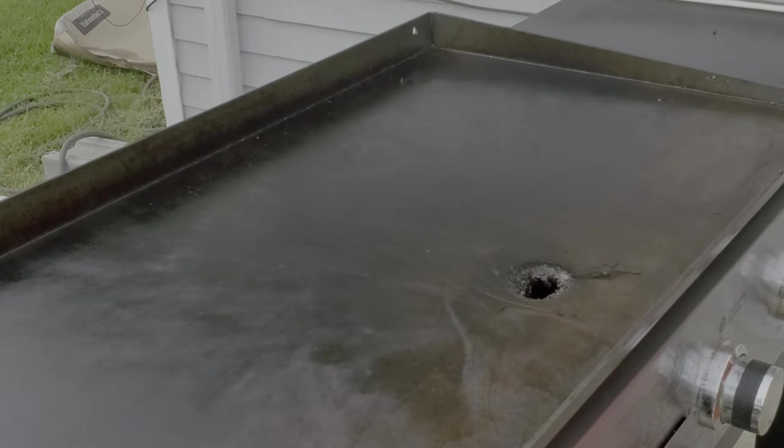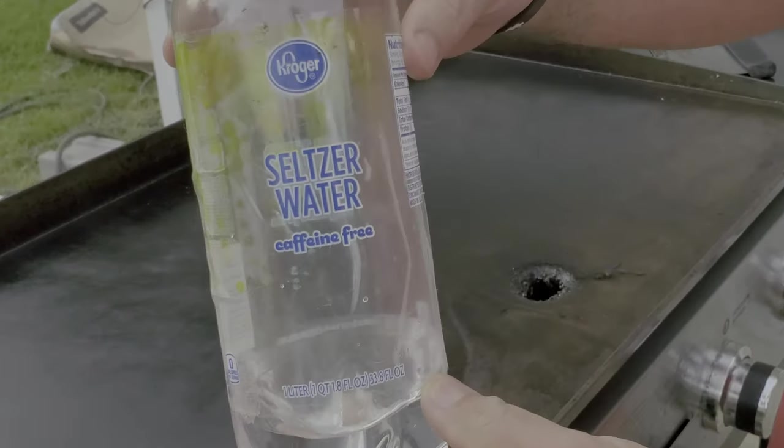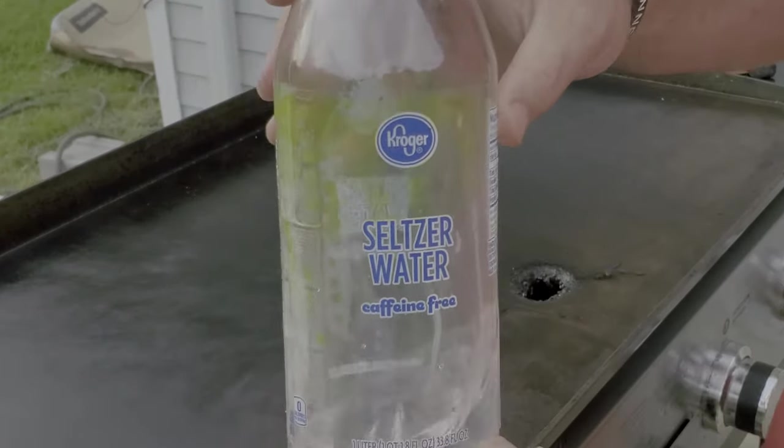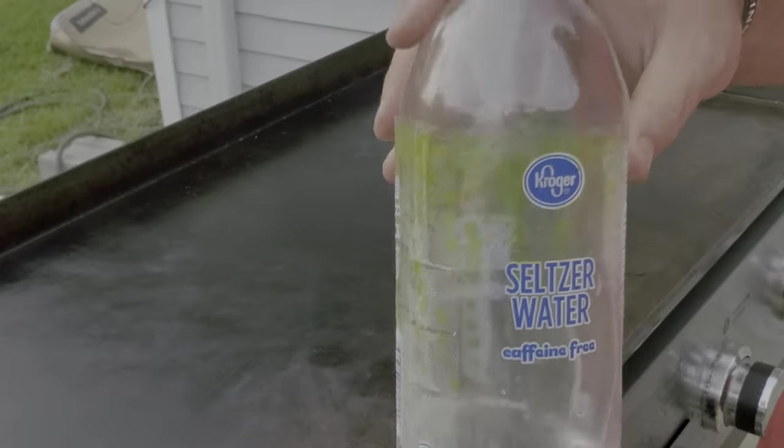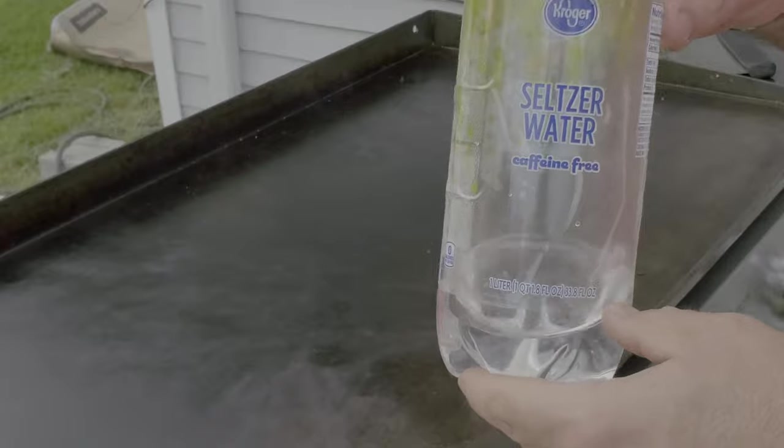So the next step in my cleaning regimen is I use a little something a little different than a lot of folks. I use just plain, unflavored seltzer water to sort of steam clean my griddle, and it works really, really well.